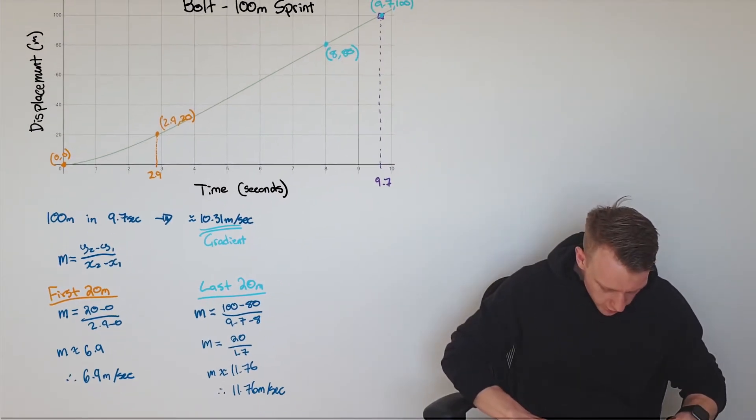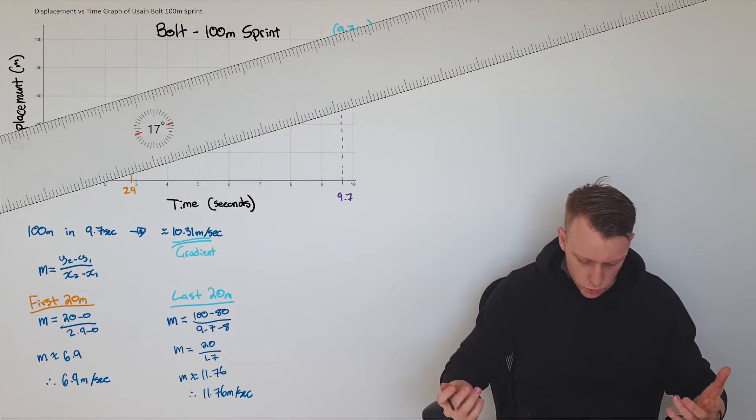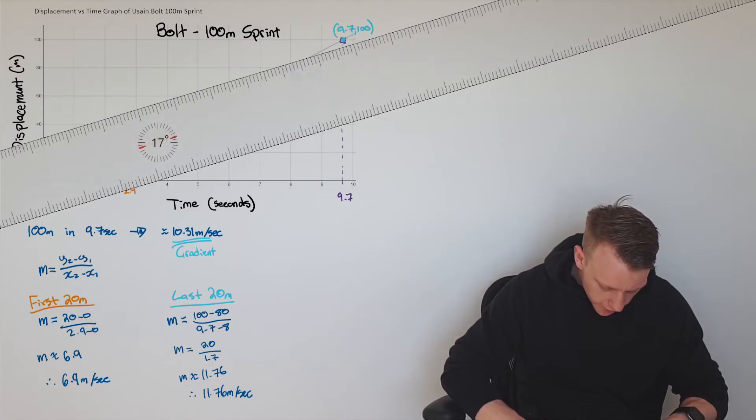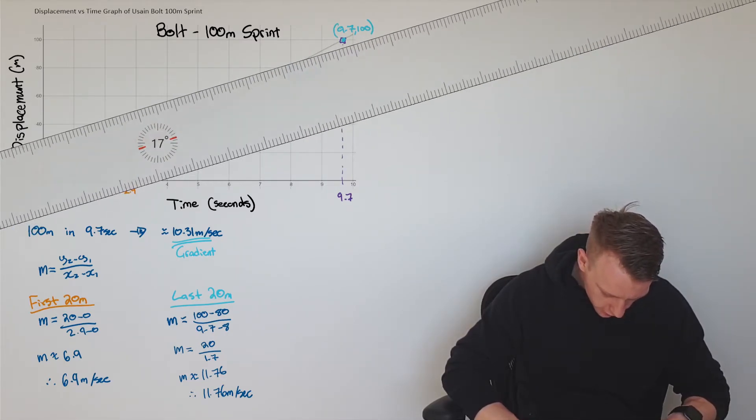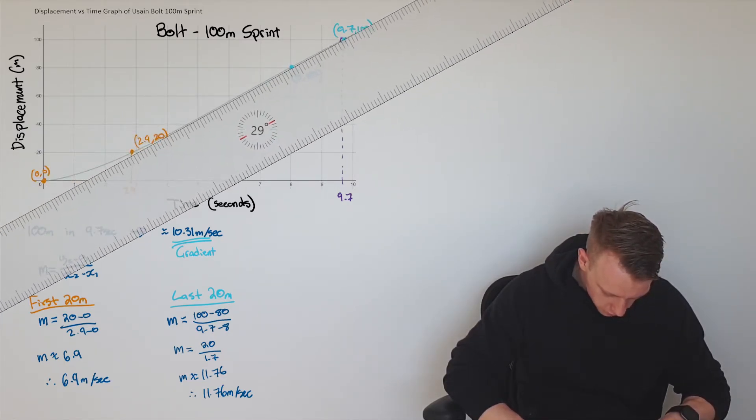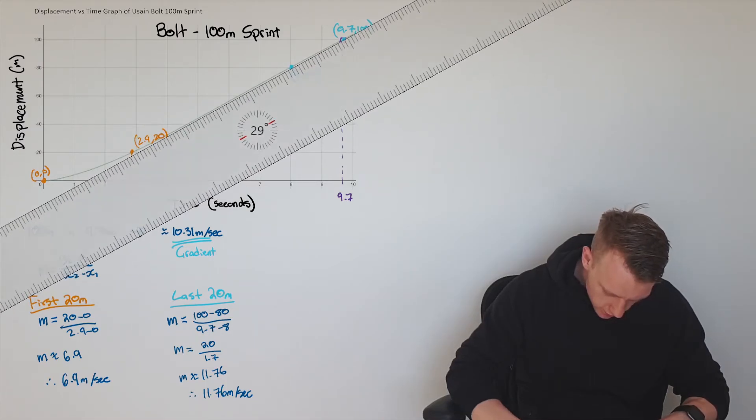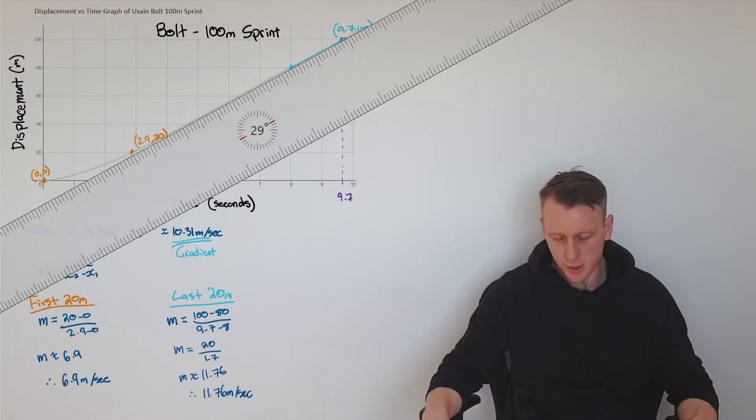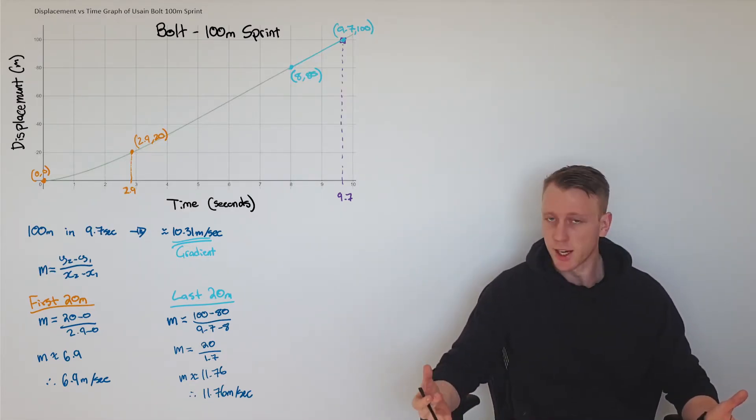Just to illustrate this point here in his last 20 meters, we can see that gradient is going to be a bit steeper. I've got to incline my ruler a little bit more to get it, so we've got a gradient of 11.76, meaning he's running 11.76 meters per second.